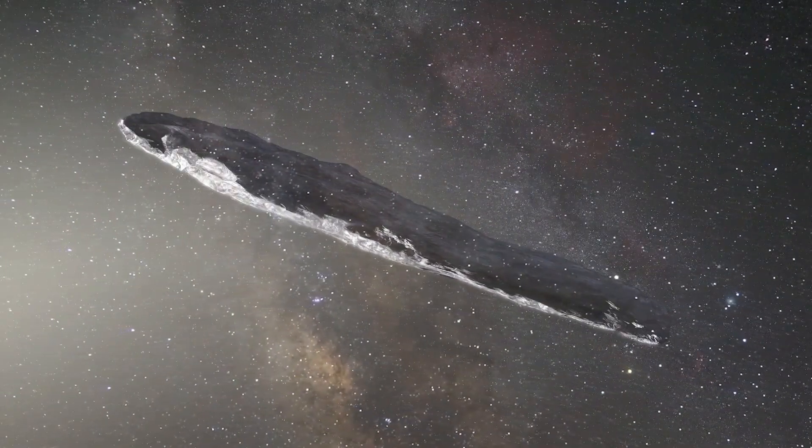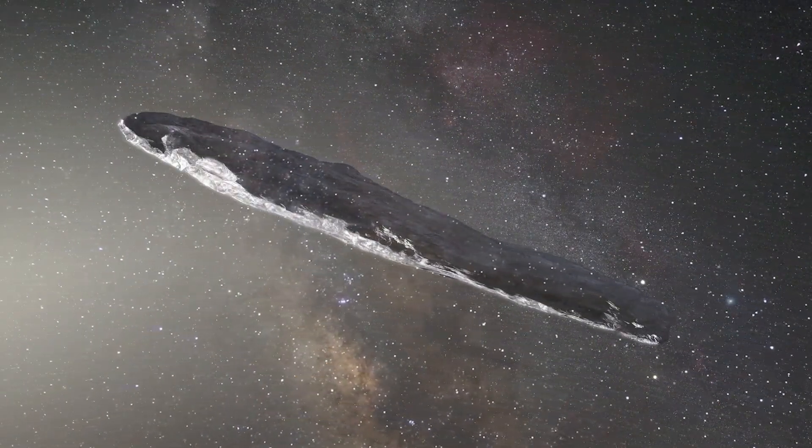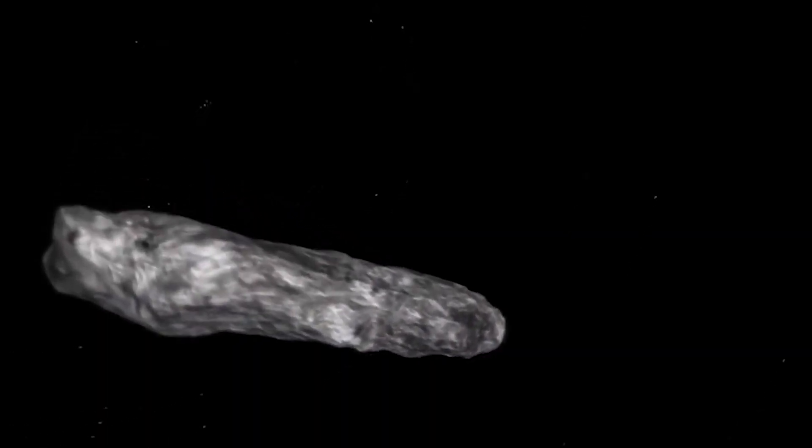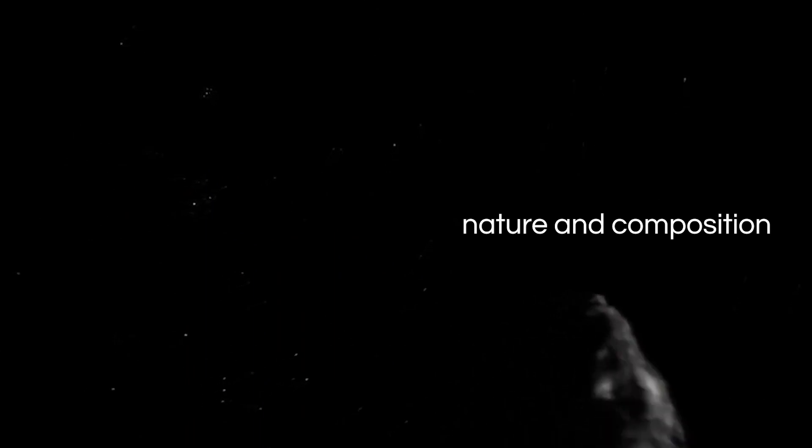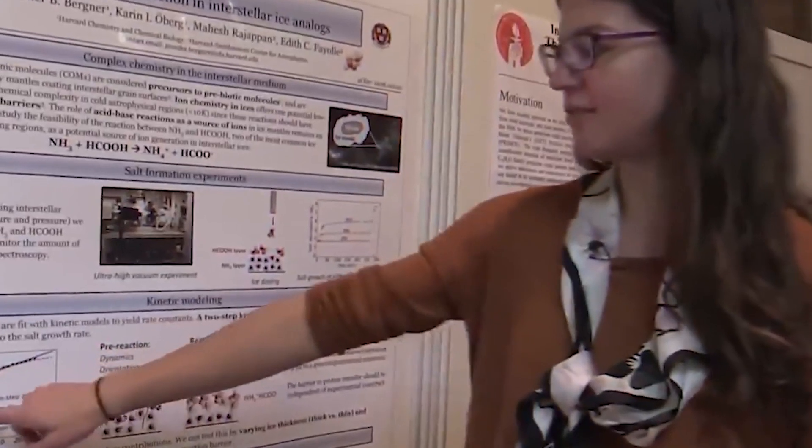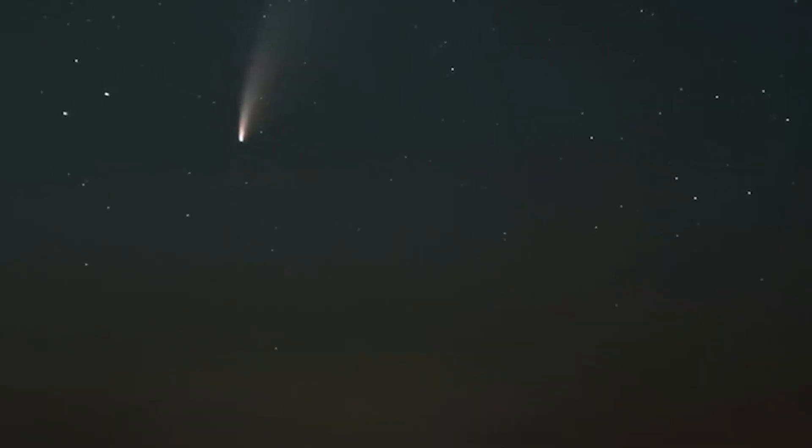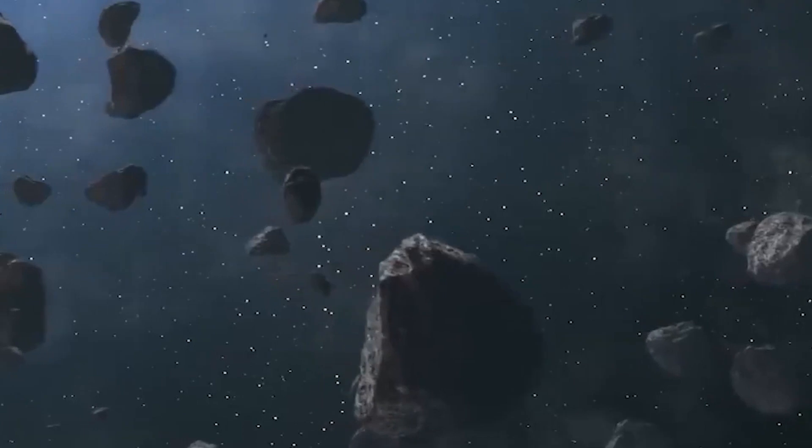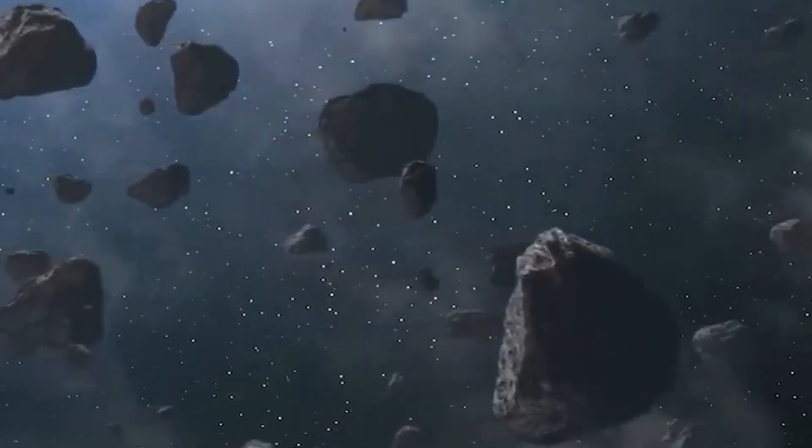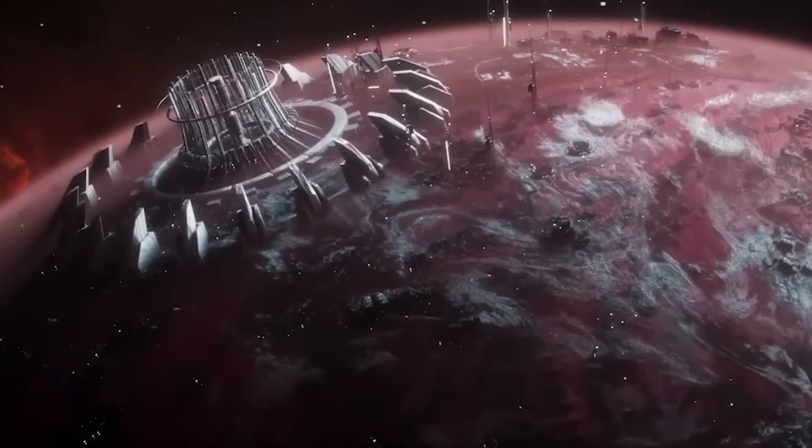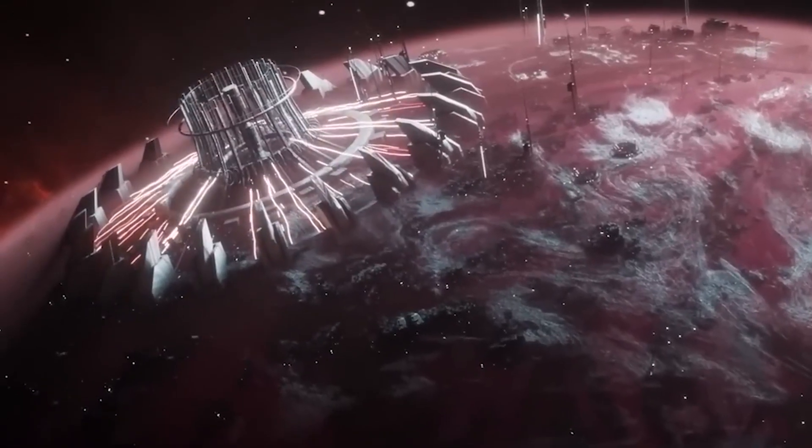The mysteries surrounding Oumuamua are not limited to its origin and trajectory alone. Speculations abound regarding its nature and composition. Scientists have put forward various hypotheses, some more audacious than others. Is it a comet that has lost its coma? An elongated asteroid altered by tidal forces? Or could it be an artificial object, a probe sent out by an alien civilization?